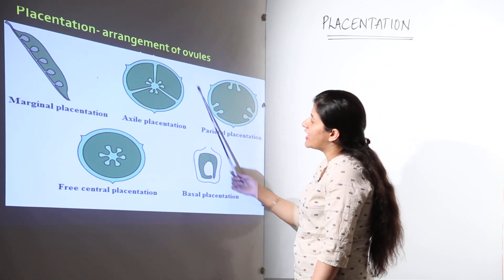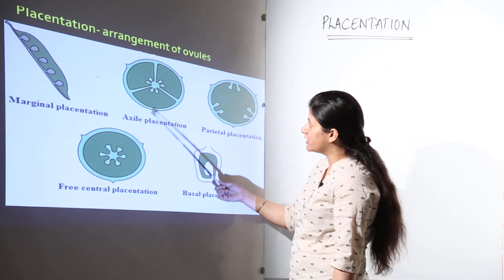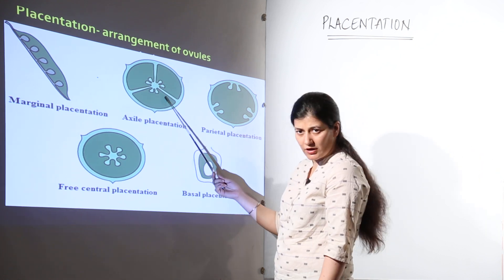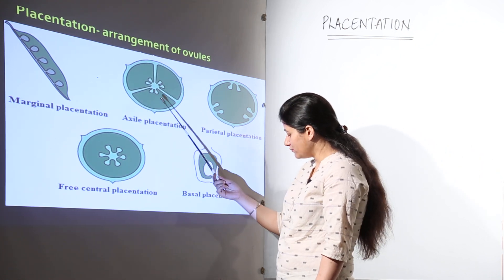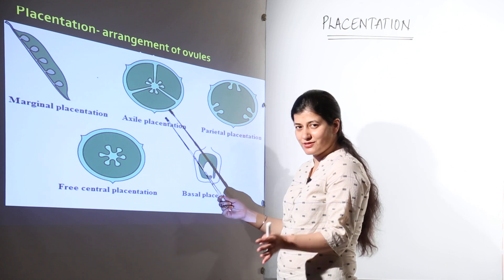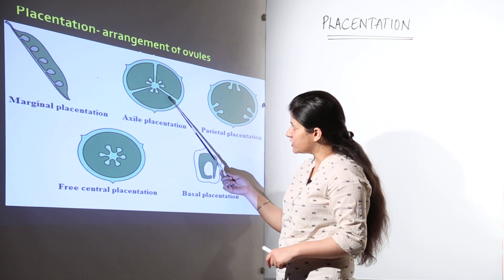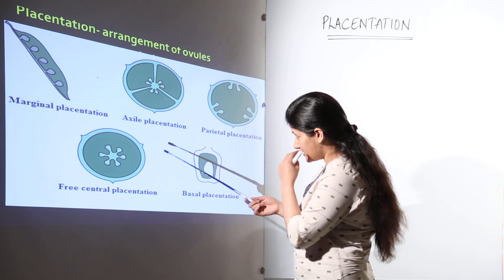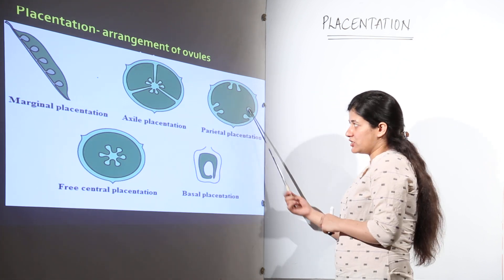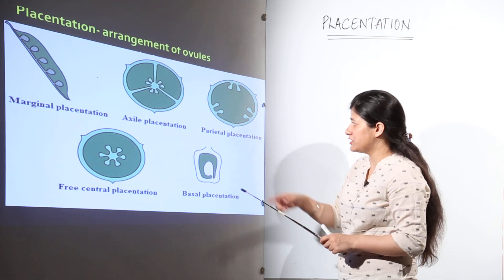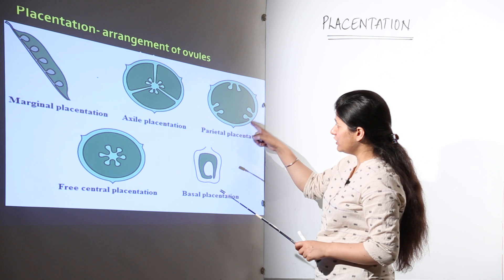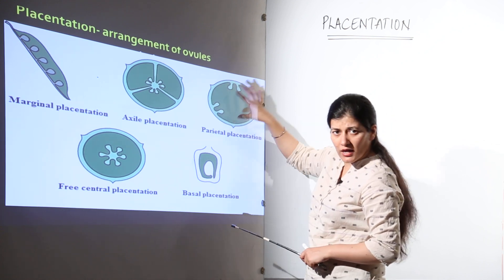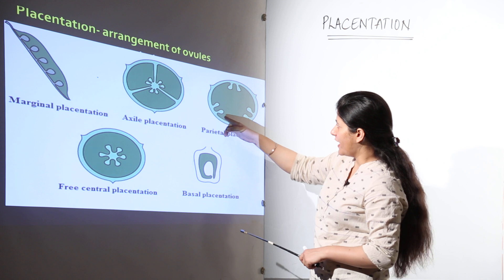The second type is axile placentation. You see the ovarian locule — three in number — with septa present, and the ovules are attached to the axis. Parietal placentation is the arrangement where the ovules are attached to the ovarian wall towards the periphery, as depicted in this picture.